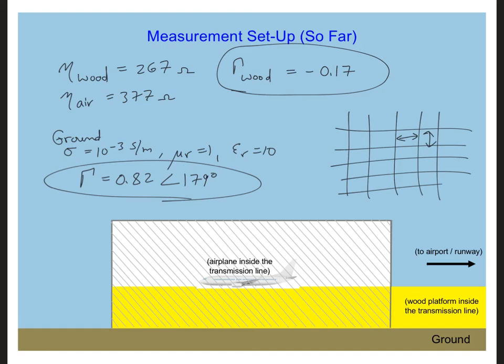Get out your in-class project notebook and compare the reflection coefficients of the wood and the ground and describe whether it's better to have the airplane elevated above the ground or resting directly on the ground. And also say something about what we can make the walls of the transmission line out of.